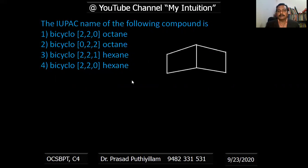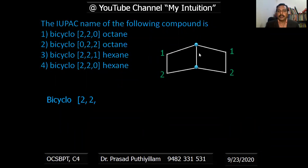First, we need to identify the two fused carbon atoms in this bicyclo molecule. Starting from the right side: one, two — so there are two carbon atoms, giving bicyclo two comma. The other side also has two carbon atoms, so two comma two. In the bridge structure, there are no carbon atoms, so it is zero: bicyclo[2.2.0]. Total carbons: two plus two plus two bridge carbons equals six, meaning hexane.